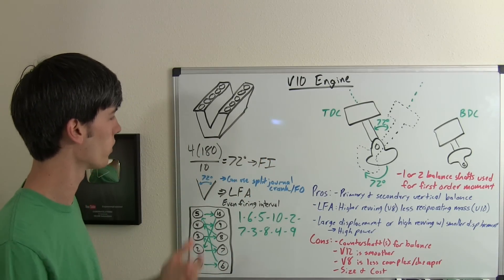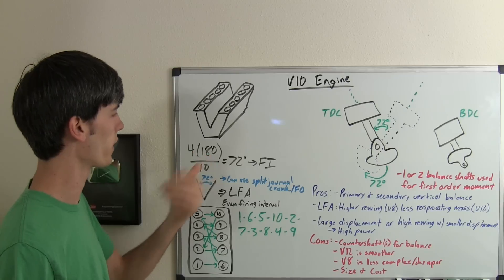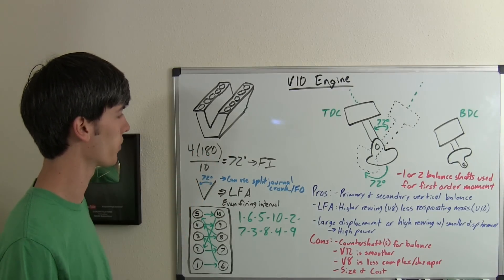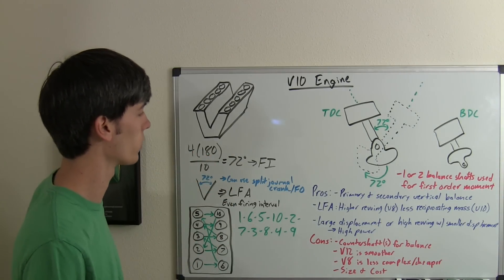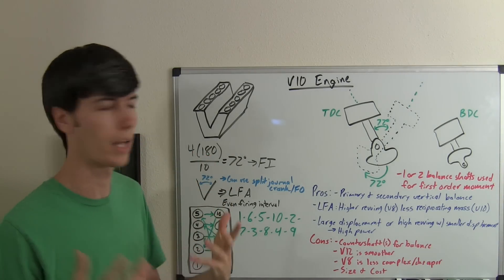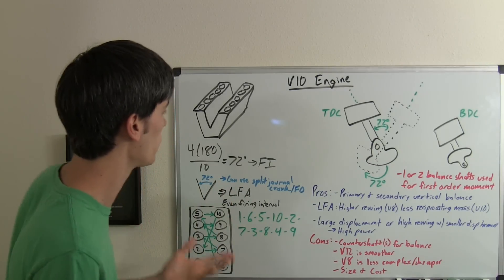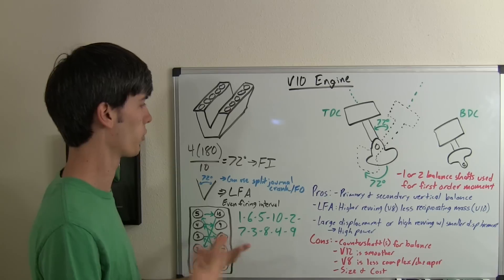If we're going to figure out the firing interval, we just take the strokes, multiply that by 180 degrees, divide by the number of cylinders. That gives us a firing interval of 72 degrees, quite a bit of overlap in a V10 engine, so you're going to have good, smooth power delivery.